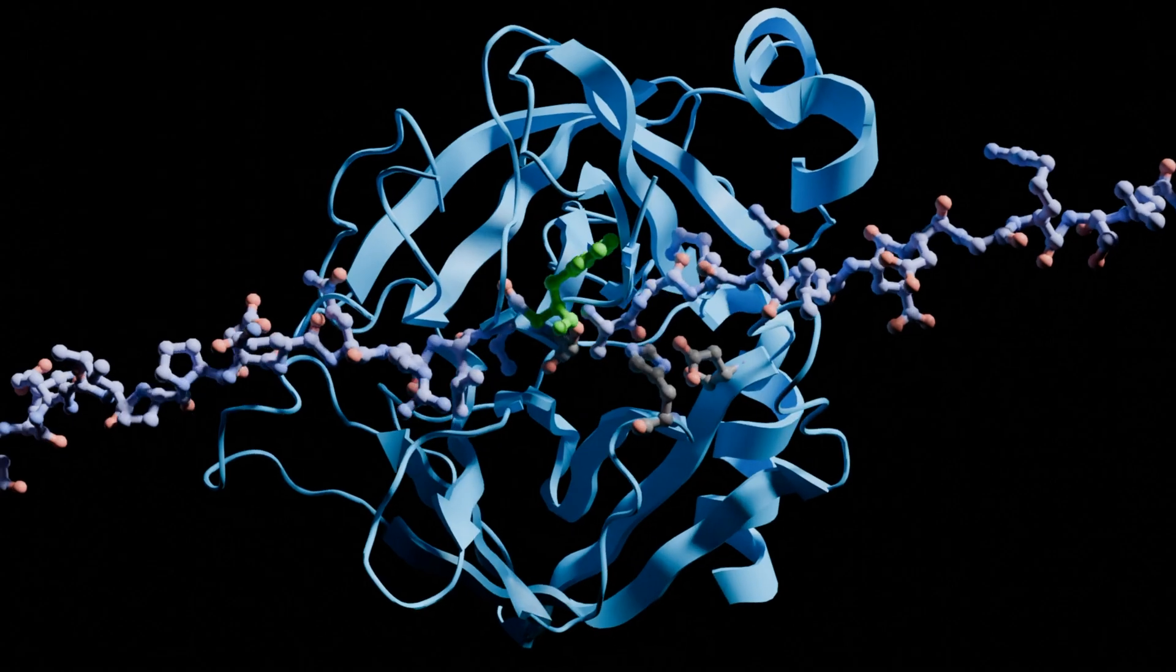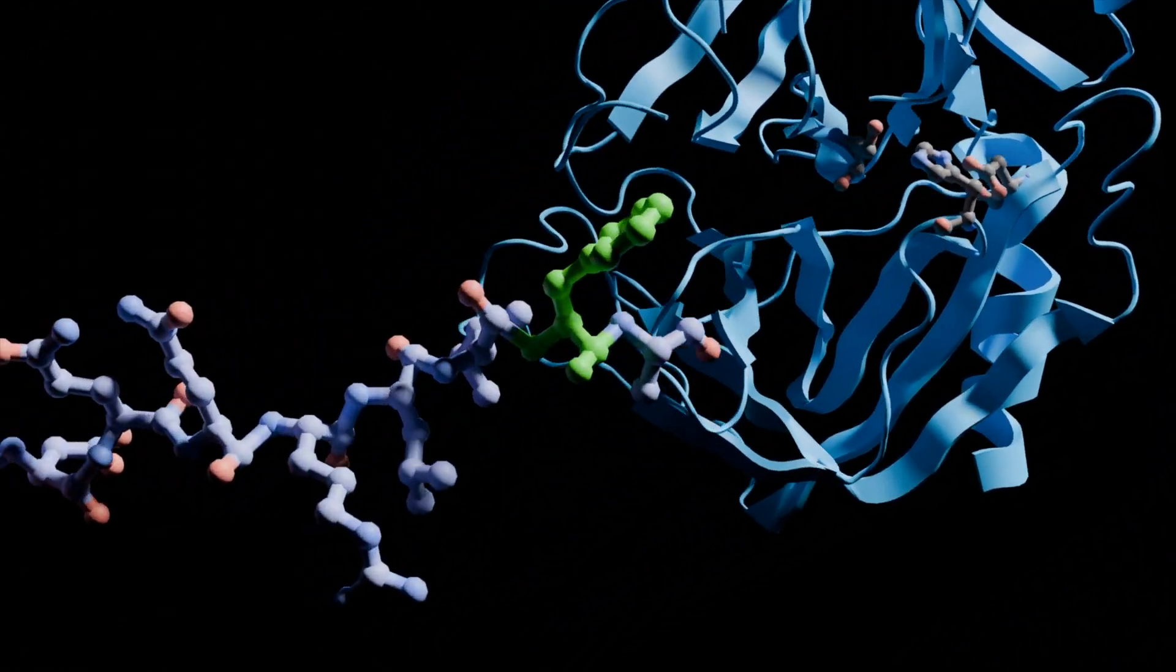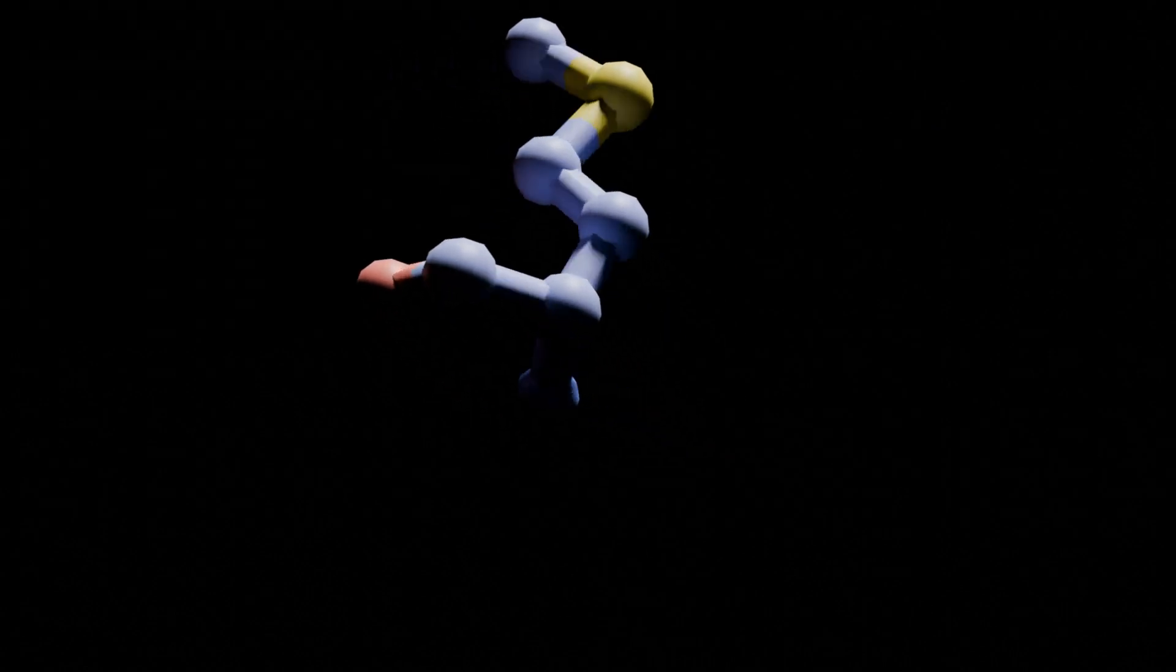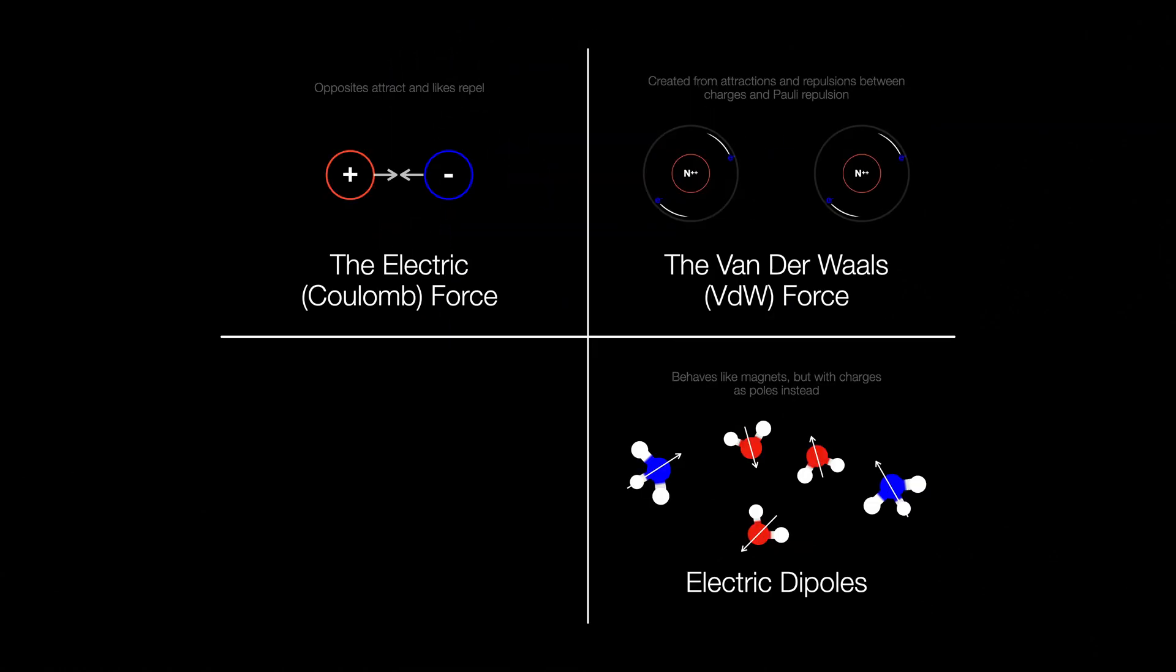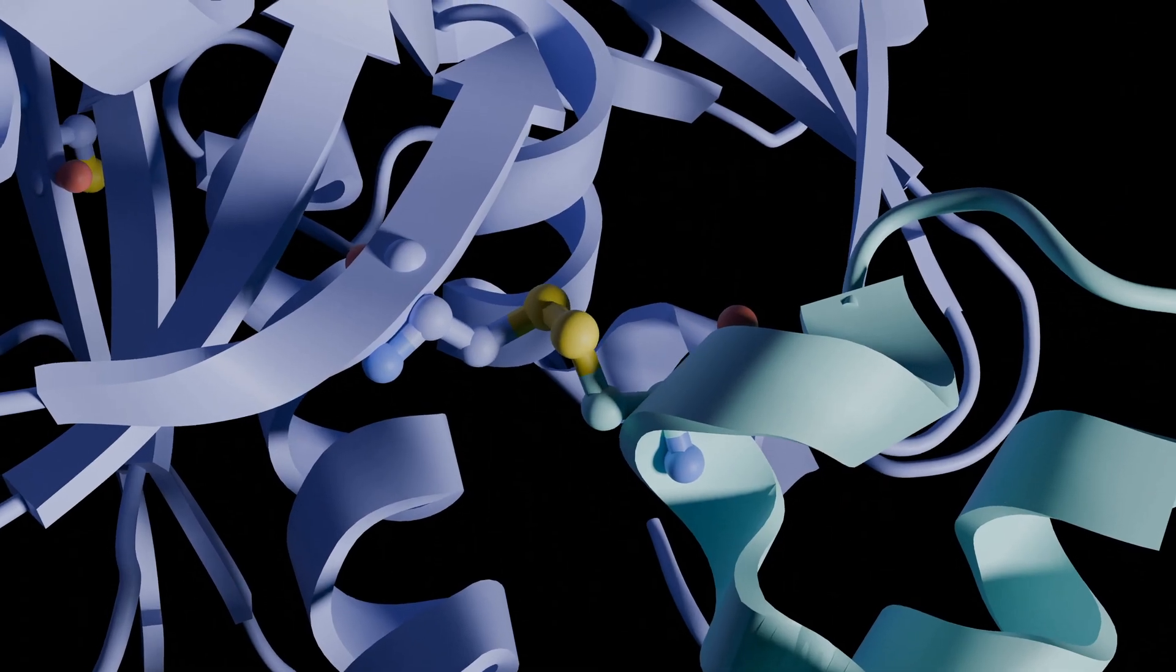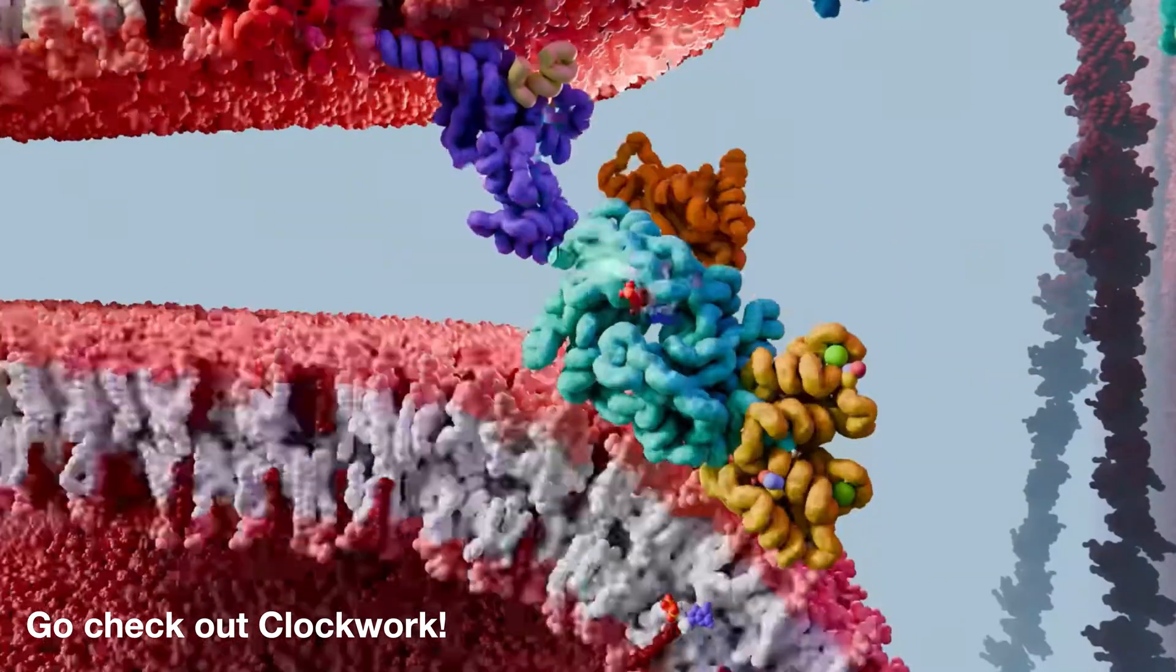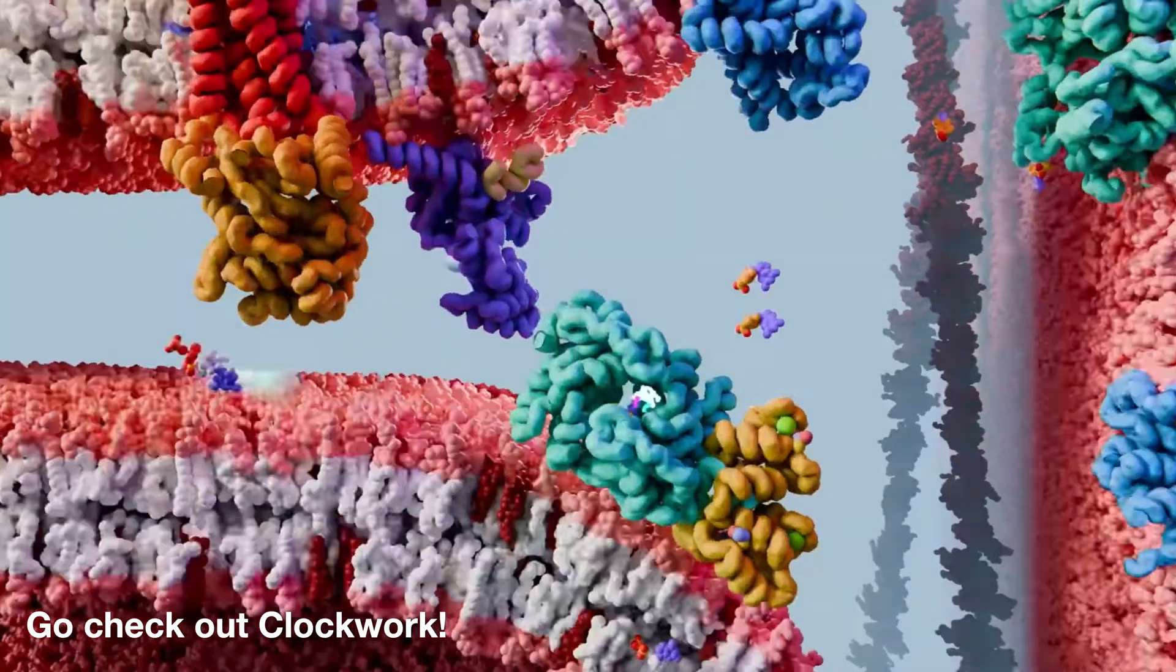But we're missing one key thing - we don't know how these little robot arms of the proteases cut proteins just yet. How does it speed the reaction up by a billion times? This is where the fourth interaction comes in: covalent bonds. And it is the reaction that constitutes what we typically think of a chemical bond. Making and breaking these bonds is what enzymes help us do better.